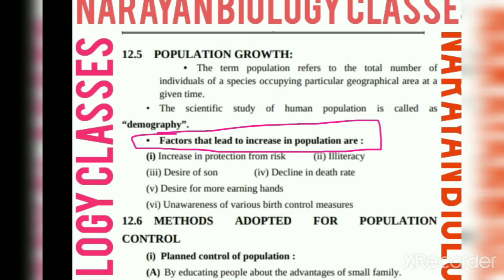The first factor which increases the population is increase in protection from risk. People have more protection, which means there is good healthcare for people, and so the population is increasing.